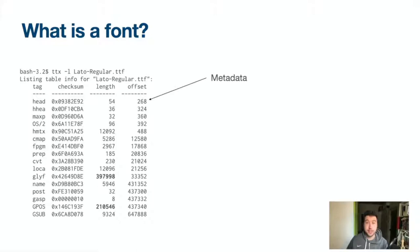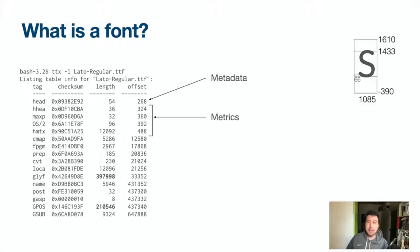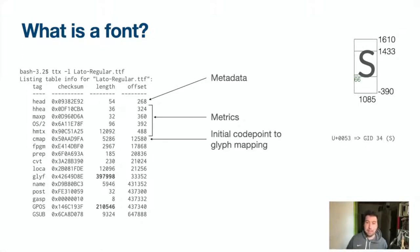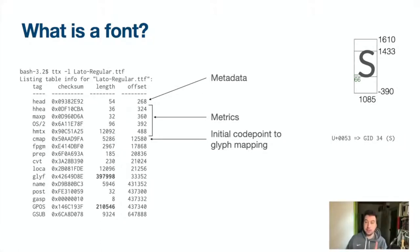What do those tables do? We've got some metadata, a header, some information about the metrics — how large things are in the font, how big a glyph is, how far below the baseline it descends, how wide each glyph is, where it starts and so on. We've also got a table which maps Unicode code points to glyph IDs in the font. Inside the font there are a bunch of glyphs, a bunch of shapes, and they have their own IDs. So we have a mapping between those and Unicode code points, so that when you type an S, we know which glyph we're going to get. That's an initial mapping — we'll come back to that a bit later.